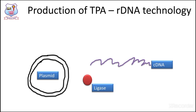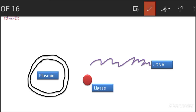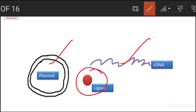These are the three requirements to synthesize recombinant DNA: we require a plasmid, the cDNA to be cloned, and a ligating enzyme. All three components are essential. Point one: plasmid. Point two: cDNA. Point three: ligase.